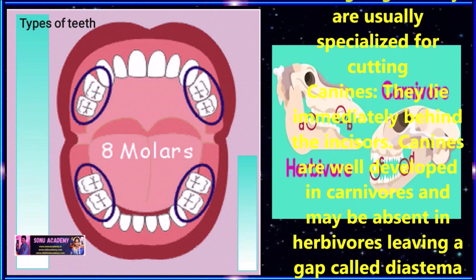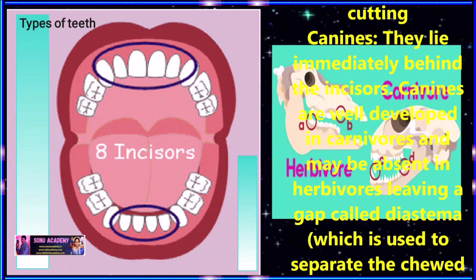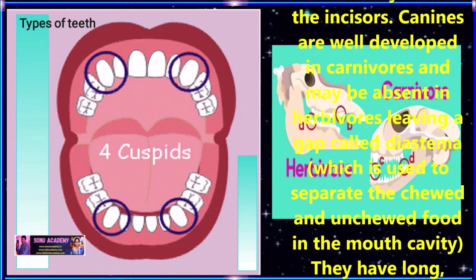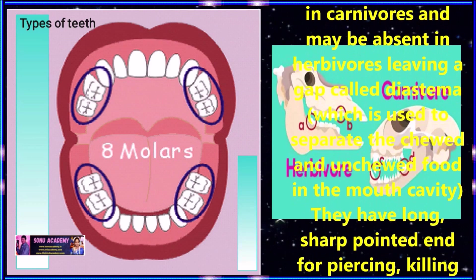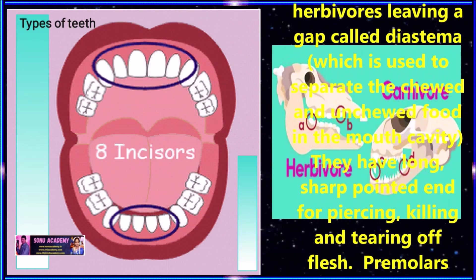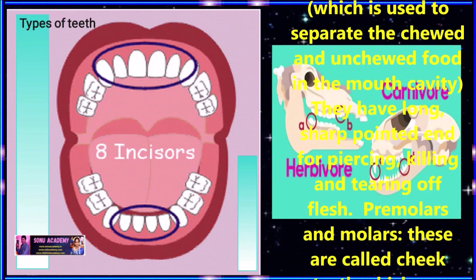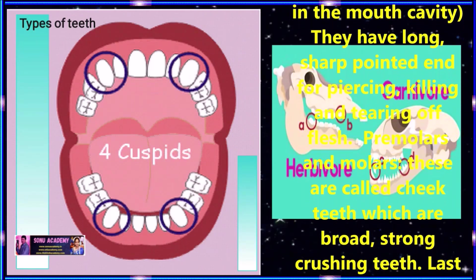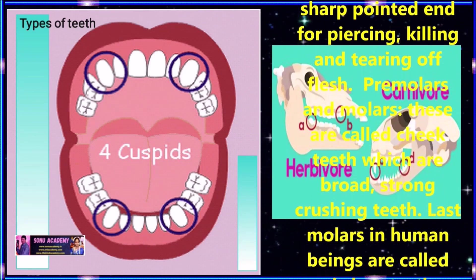Canines lie immediately behind the incisors. Canines are well developed in carnivores and may be absent in herbivores, leaving a gap called diastema, which is used to separate the chewed and un-chewed food in the mouth cavity. They have long sharp pointed ends for piercing, killing, and tearing of flesh and food.